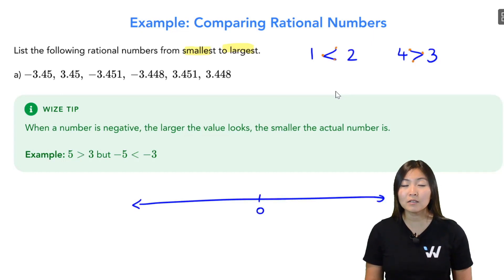Now all my positive numbers are going to go on the right. So let's look for our positive numbers here. We have 3.45, 3.451, and 3.448. They all start with a three. So we look at the next decimal. The first decimal here is a four. So they're all the same.